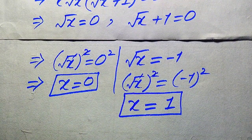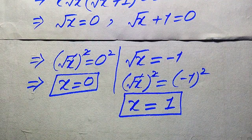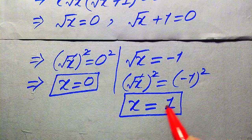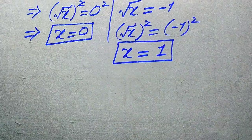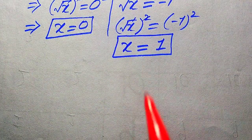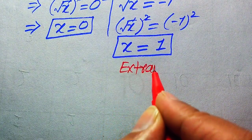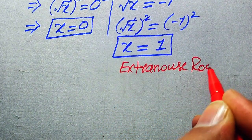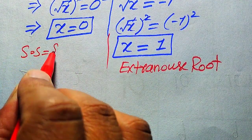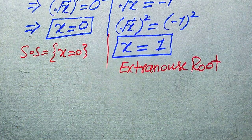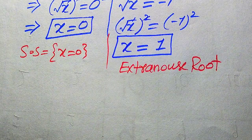In the second method we again get the same two roots. As already verified in the first method, X equals 1 is the extraneous root because it does not satisfy our given equation, and X equals zero is the solution set of the given equation because it satisfies our given equation. This is the final answer. Thank you for watching this video — please subscribe to my channel for more exciting videos.